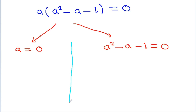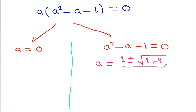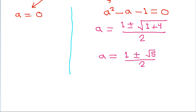From this, either a equals 0, or a squared minus a minus 1 equals 0. Applying the quadratic formula to a squared minus a minus 1 equals 0, we get a equals negative b, which is plus 1, plus or minus the square root of b squared minus 4ac, giving root of 1 plus 4, divided by 2a, which is 2. So a equals 1 plus or minus root 5, all divided by 2.